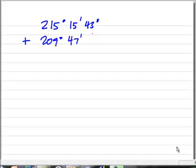So let's start with two angles and I want to add these angles. I have 215 degrees, 15 minutes, 43 seconds, and I need to add 209 degrees, 47 minutes, and 14 seconds.